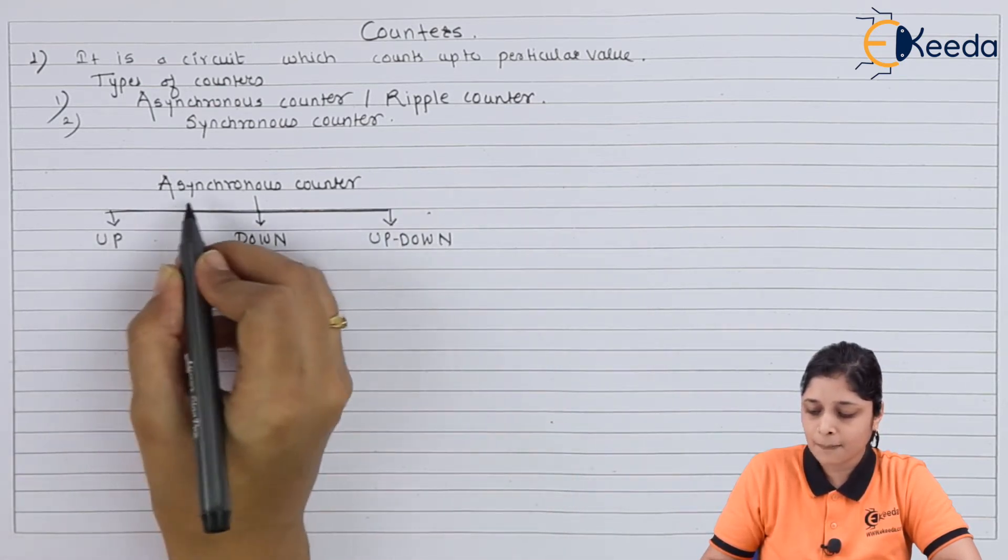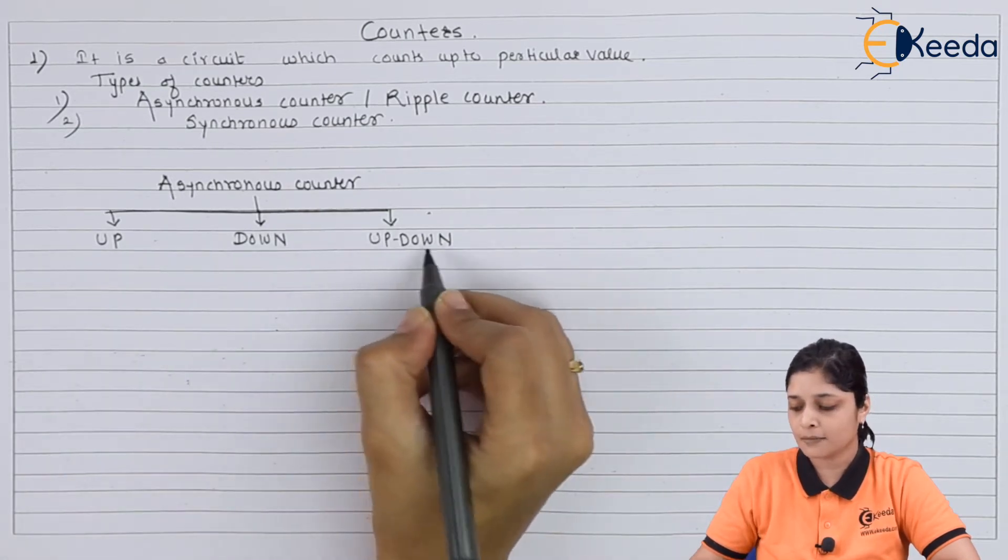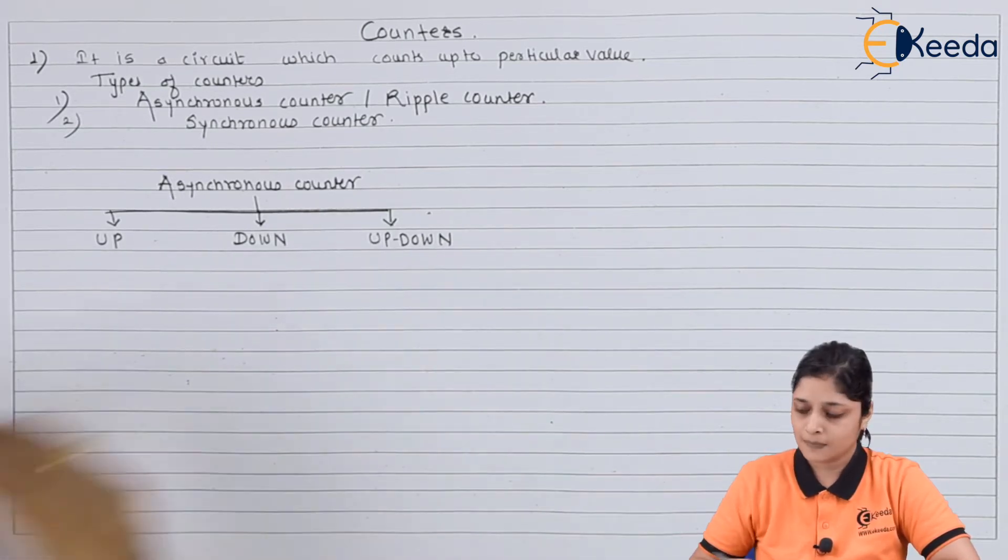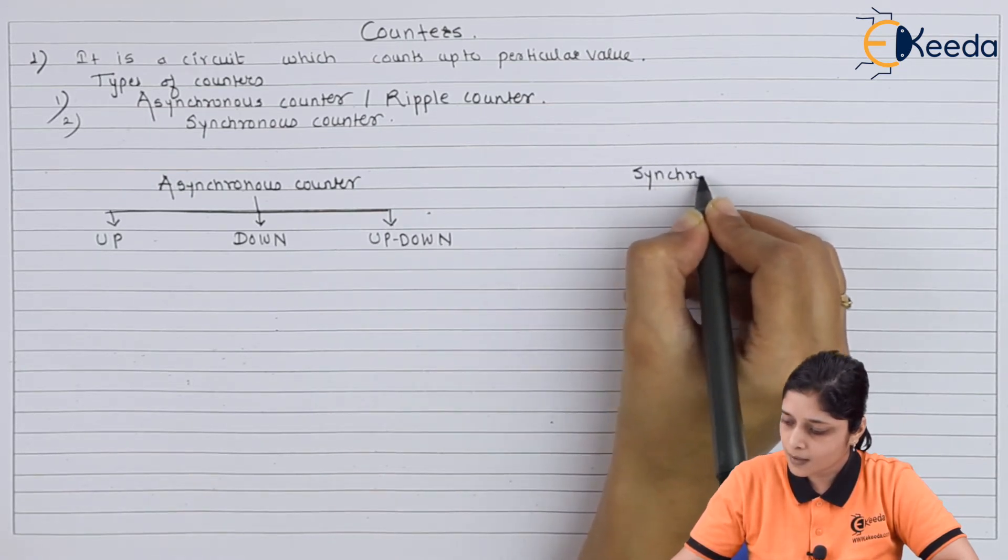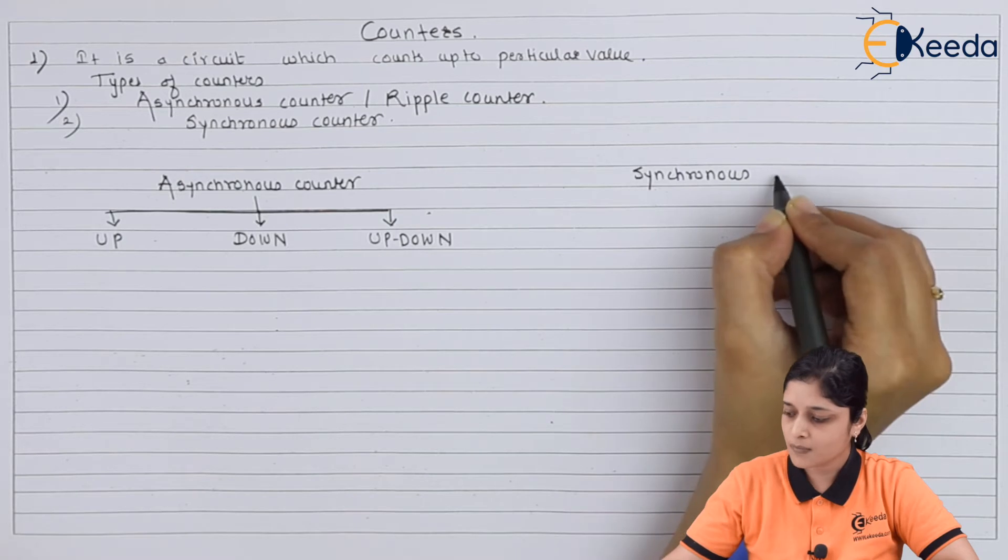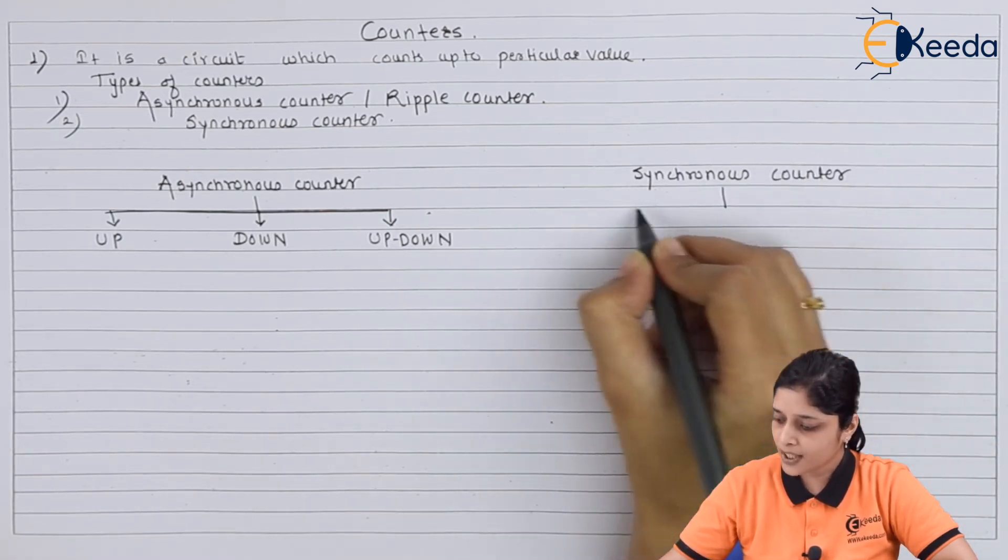That is, up asynchronous counter, down asynchronous counter, and up-down asynchronous counter. Similarly, for synchronous counter we have again three types.